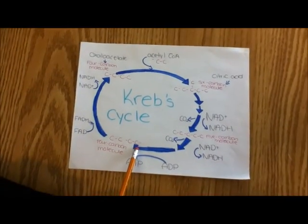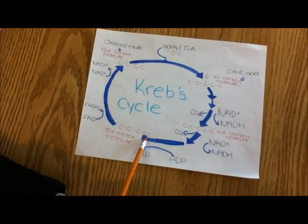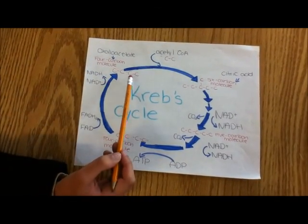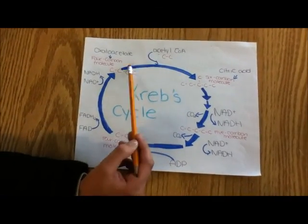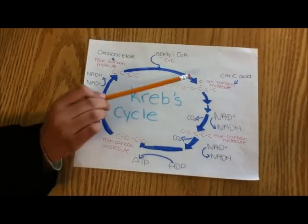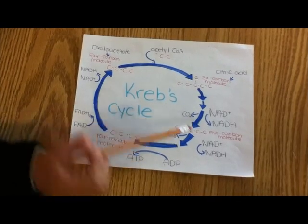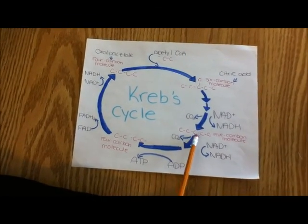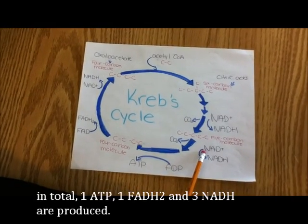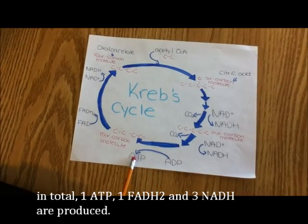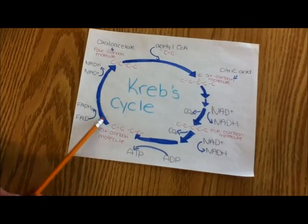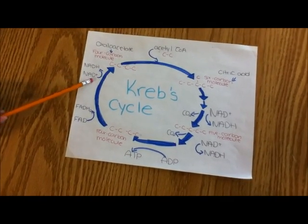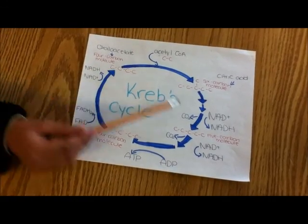The Krebs cycle is the third step in cellular respiration, also known as the citric acid cycle, and it occurs in the matrix. It starts off with a four-carbon molecule called oxaloacetate, which takes in two carbon molecules from acetyl-CoA to get a six-carbon molecule called citric acid. Moving along, CO2 is released and NAD+ turns into NADH, giving you a five-carbon molecule. This process repeats: CO2 is lost, NAD+ becomes NADH again, and ADP converts into ATP, leaving you with a four-carbon molecule. Then FAD converts into FADH2, and NAD+ turns into NADH once more. You're back to the four-carbon molecule and the cycle begins again.